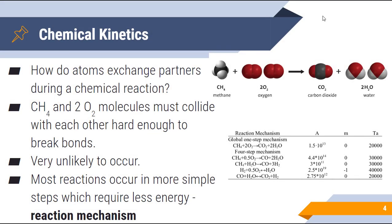One of the questions we want to answer in chemical kinetics is: how do atoms actually exchange partners during a chemical reaction? For example, we take a methane molecule and combine it with two oxygen molecules to produce carbon dioxide and water — but how do they actually do that? According to some previous theories, the methane and two oxygen molecules must collide with each other hard enough to break those bonds. Unfortunately, that's very unlikely — it's very unlikely that all three molecules will combine simultaneously at the right angles to produce those products.